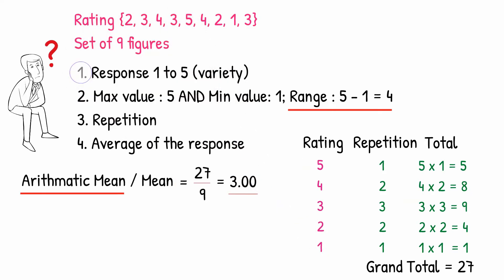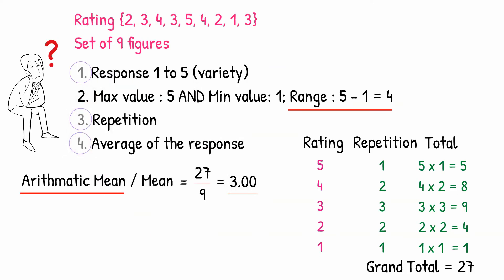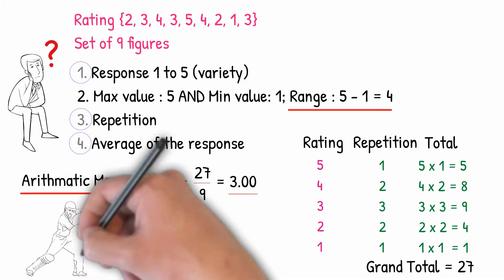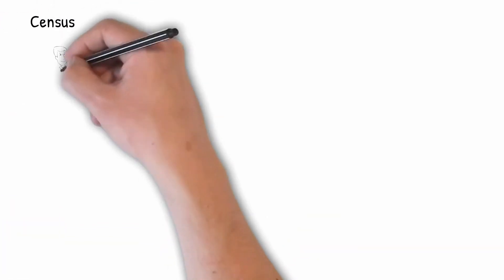Broadly speaking, when we have variety in response with repetition for each response and we need to take the average, we could rely on the arithmetic mean. You will often see this measure being used in describing a batsman's strike rate in cricket. Now that we have understood the mean, let's look at another scenario.